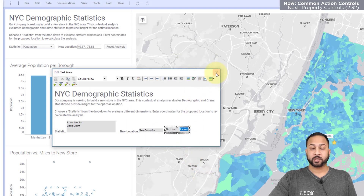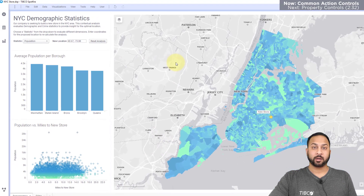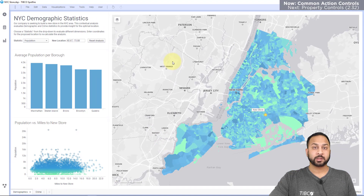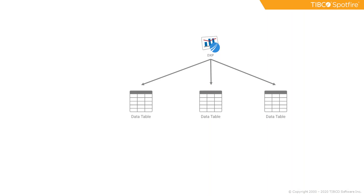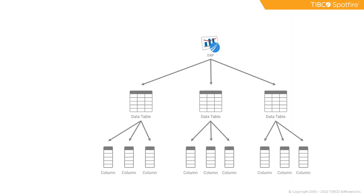The other type of control to talk about are property controls. But first, let's talk about how properties work in Spotfire. You have a DXP, and in that DXP you can have multiple different data tables, and in those data tables you can have multiple different columns. A document property exists at the DXP level and is accessible to your entire visual analysis.